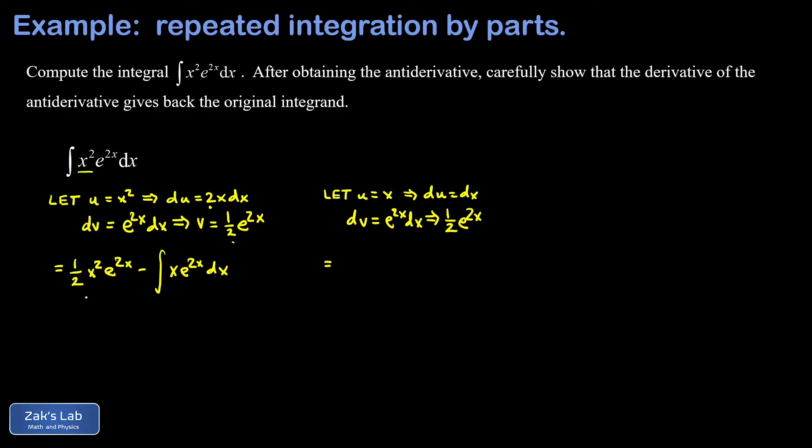We apply integration by parts again. This time we have a spectator term out in front. We're computing this integral, but don't forget to copy down that spectator. We have minus this integral that we're computing by using parts again. We get u times v, that's one half x e to the 2x, minus the integral of v du. I forgot to label one half e to the 2x as v, so there's that. du is simply dx, so I end up with the integral of one half e to the 2x dx.